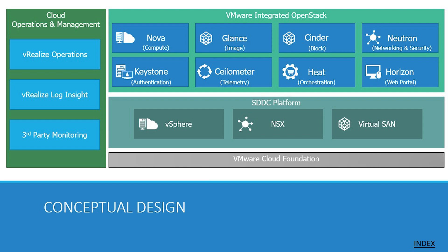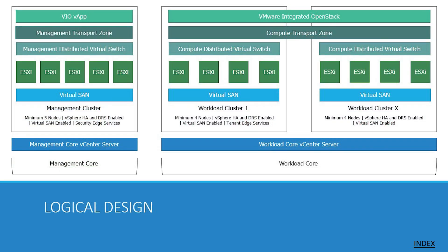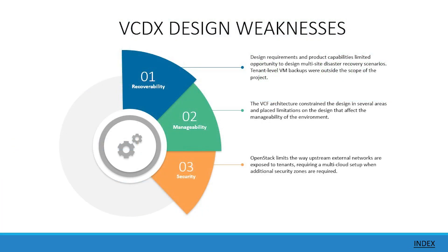From there I immediately moved into what the conceptual design looked like for VIO, or VMware Integrated OpenStack, and how that was going to layer on top of my SDDC platform. Then from the conceptual design I moved into the logical design. These were diagrams that were in my documentation that I submitted as part of my VCDX packet, so I made sure to include those inside of my design presentation.